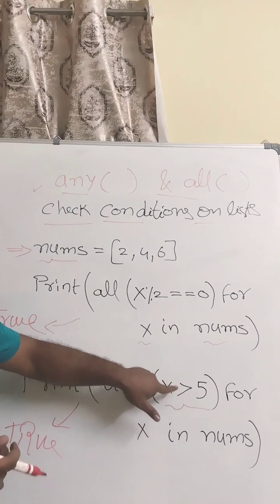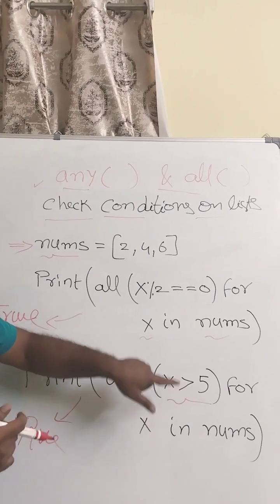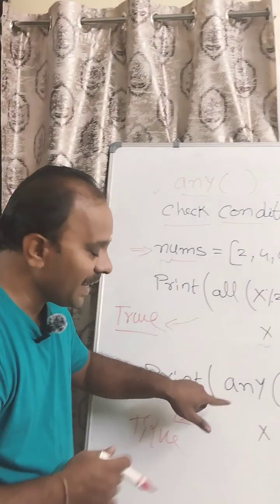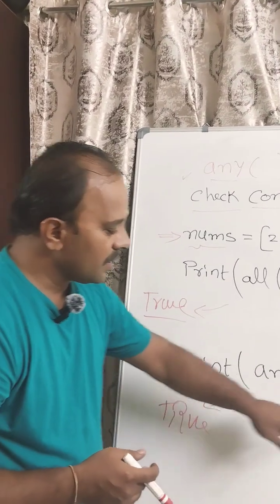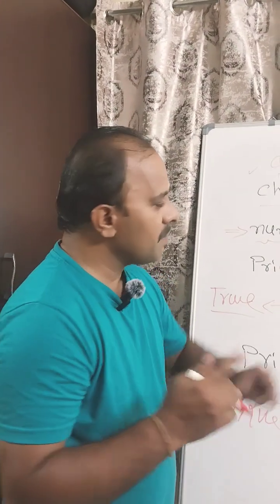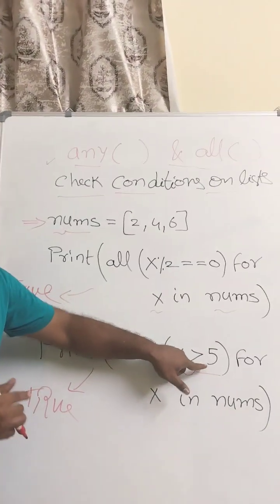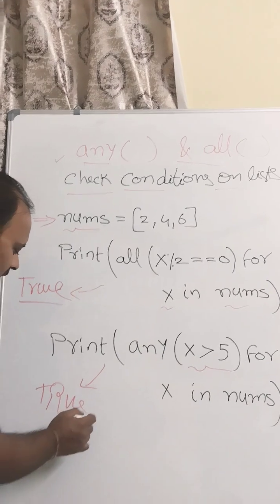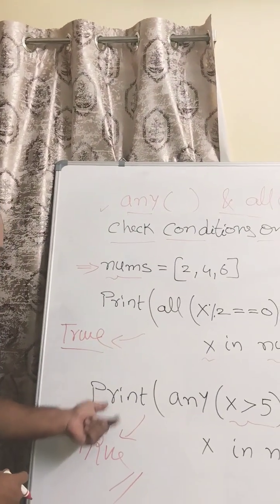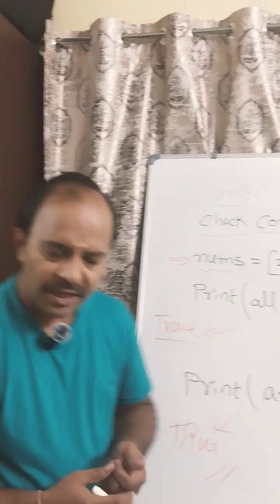No. 4 greater than 5? No. And is 6 greater than 5? Yes. So that is what any means. Since the list nums consists of 3 elements, and among the 3 elements, the element 6 is greater than 5, the boolean output results in true. The output of this print function is true. Thank you.